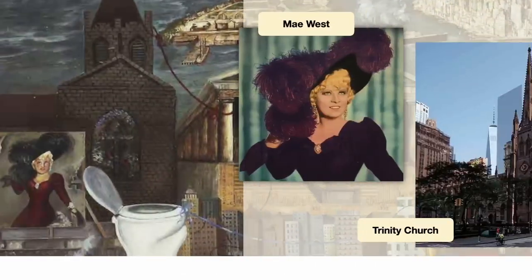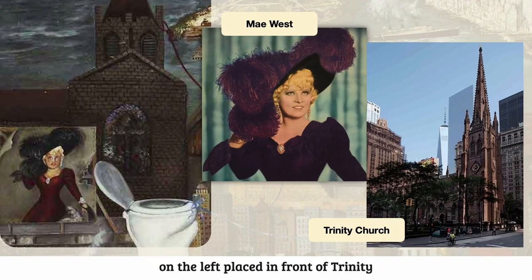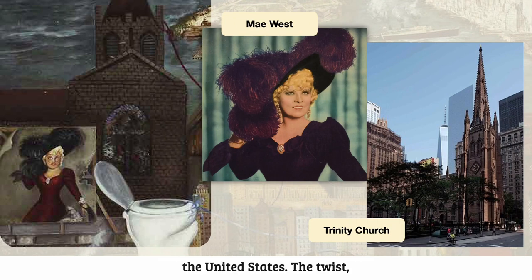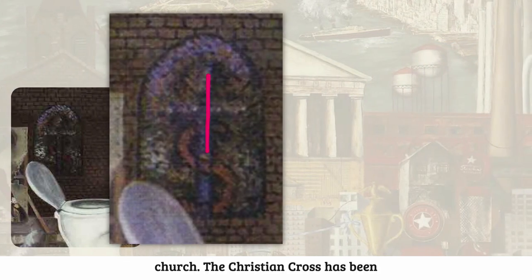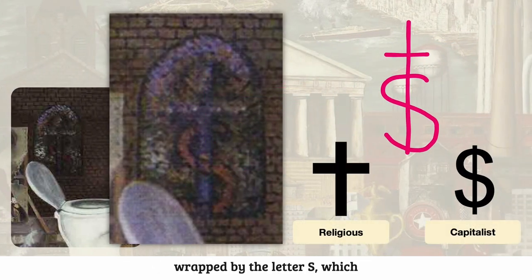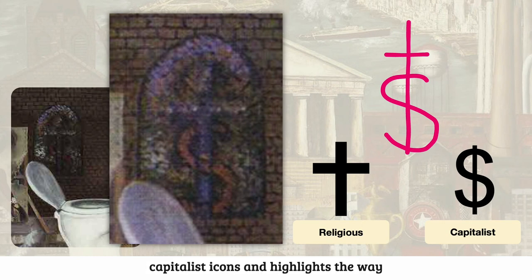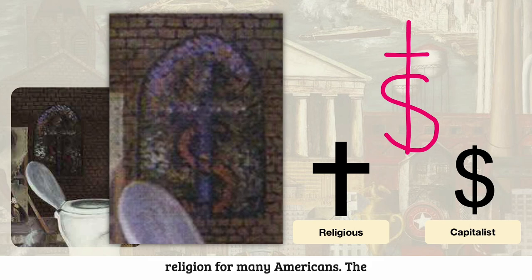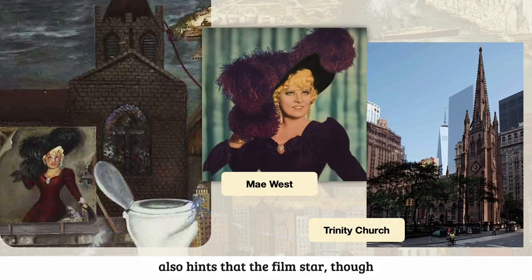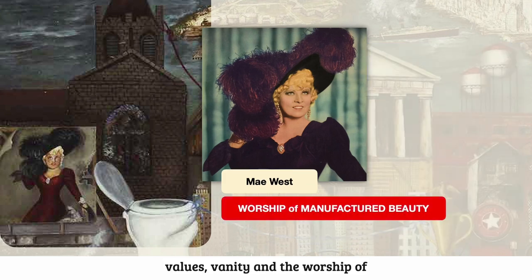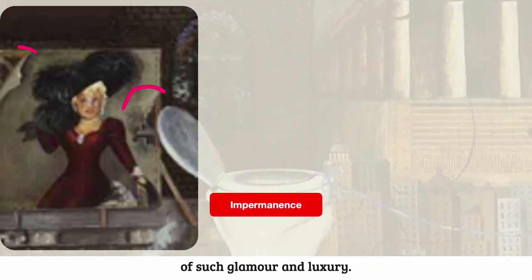An advertisement of American popular cultural icon Mae West is seen on the left, placed in front of Trinity Church, an important religious symbol in the United States. The twist, however, is seen in the window of the church — the Christian cross has been wrapped by the letter S, which transforms it into a dollar sign. This is a clear merger of religious and capitalist icons, and highlights the way in which money has become the new religion for many Americans. The juxtaposition of Mae West and the church also hints that the film star, though revered by many, represents false values, vanity, and the worship of manufactured beauty. The peeling advertisement reveals the impermanence of such glamour and luxury.